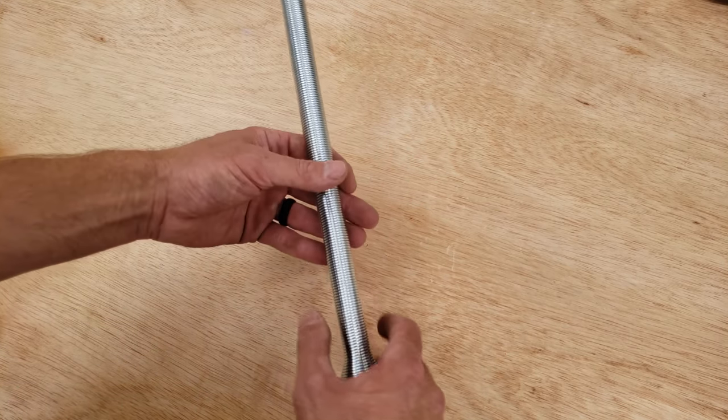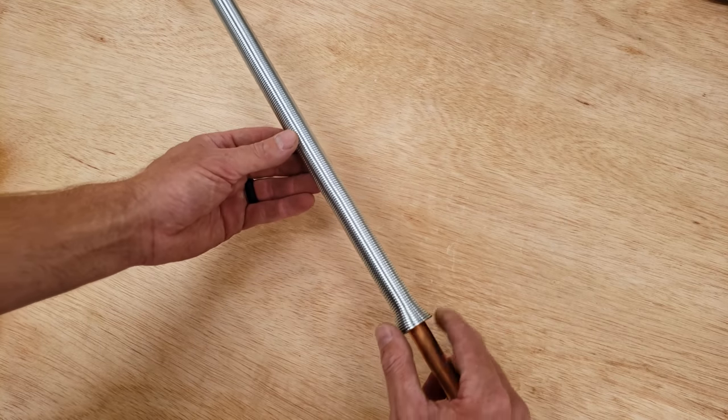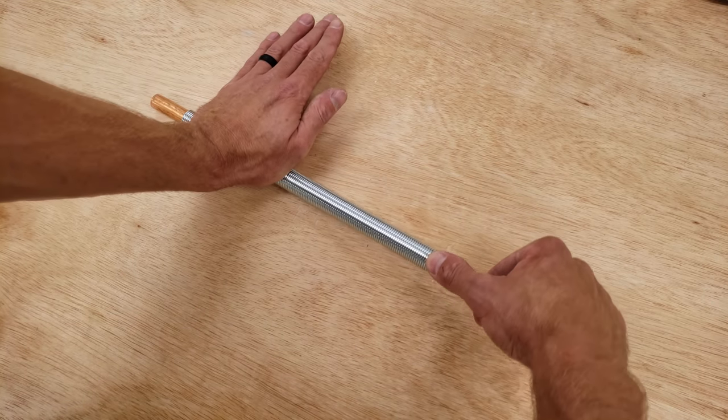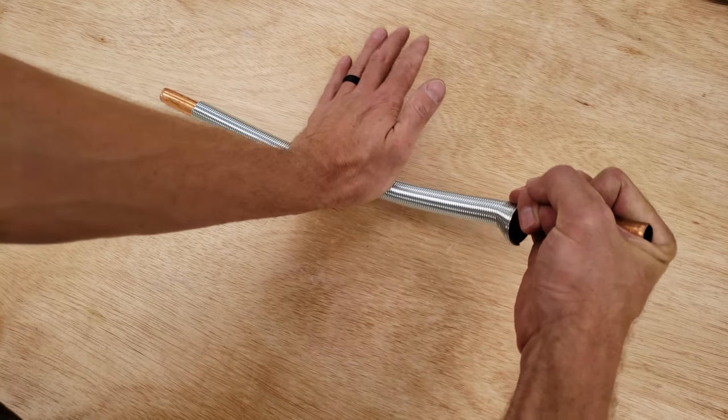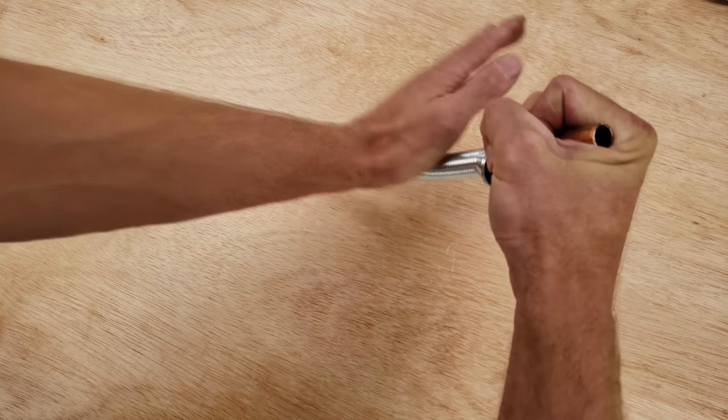If you're worried about kinking the tube, what you could do is use a spring type bender and just feed it down over the tube and do the same thing. Now you can do this a little faster because the springs are going to help you when you're doing your bends.